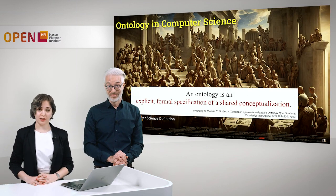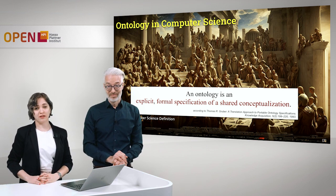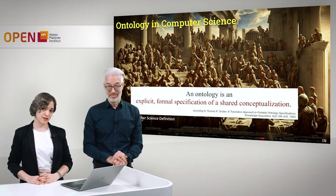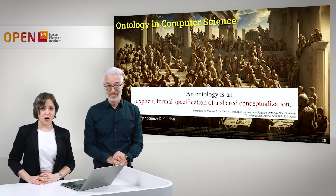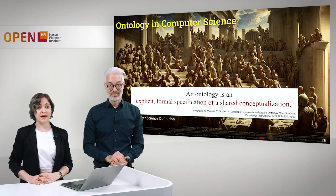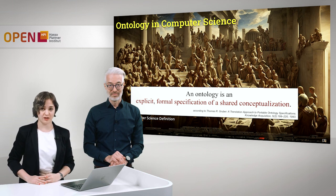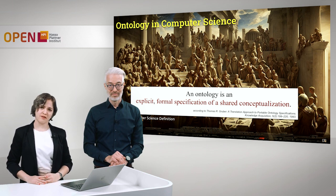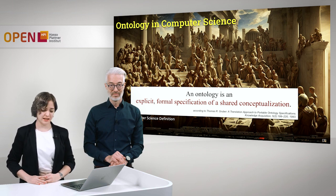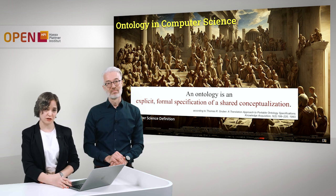Today in computer science, we have a different definition for an ontology. According to Thomas Gruber in the 1990s, an ontology is an explicit, formal specification of a shared conceptualization. This definition doesn't sound so easy to grasp, so let's have a look at each of the words appearing in this definition of an ontology.